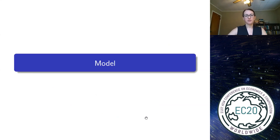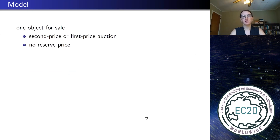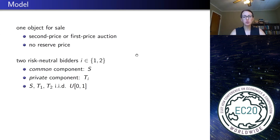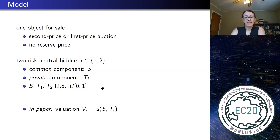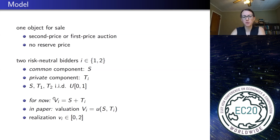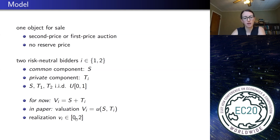Let me dive into the model. We have one object for sale and there is no reserve price. There are two risk-neutral bidders indexed by i, and each bidder has a two-dimensional type: a common component s that is the same for both bidders, and a private component ti that is individual. All components are drawn i.i.d. from the uniform distribution on [0,1]. The total value of the object is simply the sum of the common component plus the private component — any value between 0 and 2.